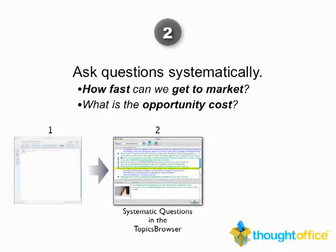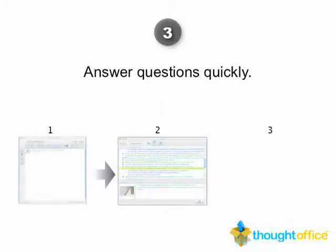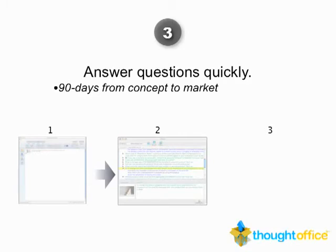We present your expert topic modules in a thing called the Topics Browser — a small interface that pops out of ThoughtOffice and gives you a place to explore different questions and pop them into your brainstorming session. Now that we've asked these questions systematically, the next thing to do is work on answering them, and the best way to do that is just very quickly, stream of consciousness.